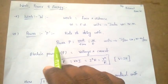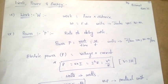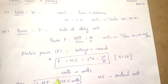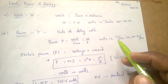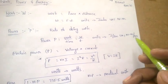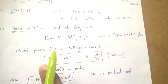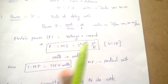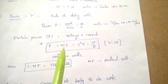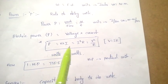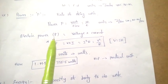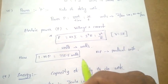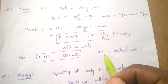Electric power is the product of voltage and current. P equal to V into I. Since V equal to IR, we can also write P equal to I-squared R, or V-squared by R. The units of electric power are watts. The practical unit of power is HP — horsepower. One horsepower equal to 735.5 watts.